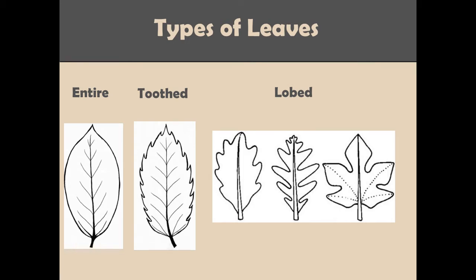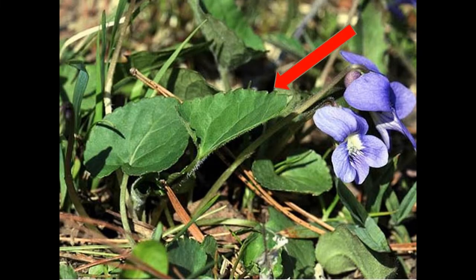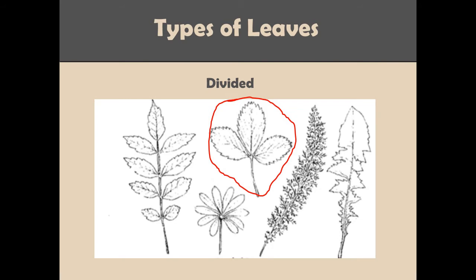Leaves that are only lobed at the base, such as heart-shaped leaves, will actually be termed as either entire or toothed, depending upon their leaf margins. An example of this is the violet. A divided leaf is actually divided into separate parts known as leaflets. Each illustration on this slide is an example of one leaf. Let's take a look at the wild strawberry leaf circled in red — this leaf is made up of three leaflets. Leaves like the dandelion leaf on the far right, where the indentation goes almost to the mid-rib, are considered to be divided.